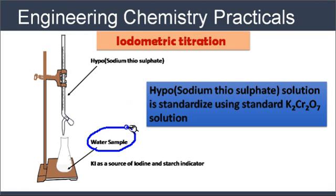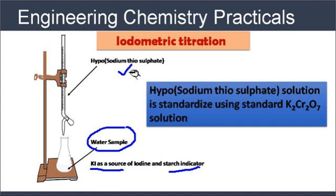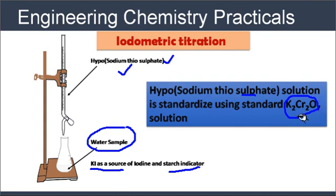In this titration, the water sample in which free chlorine amount is to be determined is titrated with hypo solution. Hypo is the sodium thiosulfate, in presence of starch indicator, using potassium iodide as a source of iodine. Before doing this titration, we have to standardize the hypo solution by titrating it with standard potassium dichromate solution. So in this experiment we will perform two types of titration.